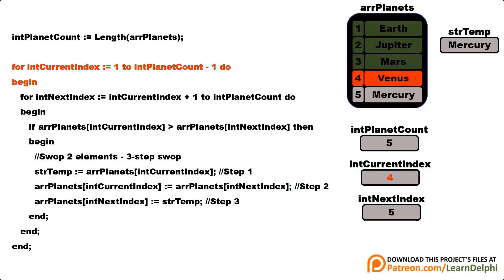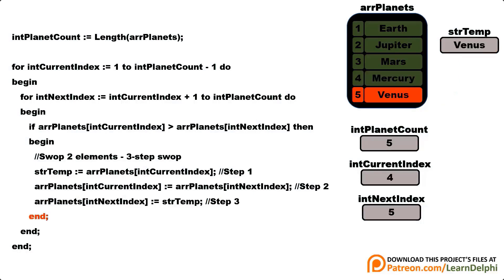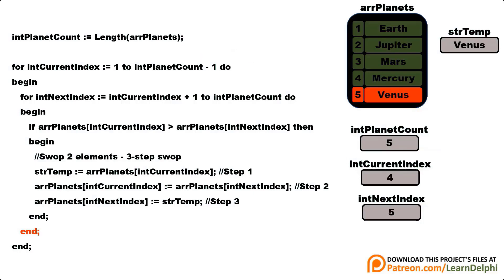The compiler increments the current index to 4 and finds Venus. The inner loop finds Mercury at the next index — Venus is greater than Mercury, so we swap: store Venus in temp, overwrite Venus with Mercury at position 4, then write Venus back where Mercury was. The inner loop reaches the end of the array, and Mercury is now in its final position. The outer loop cycles the number of elements minus 1, so when it reaches the second last element it is done — Venus is also in its final position, and the array is sorted in ascending order.